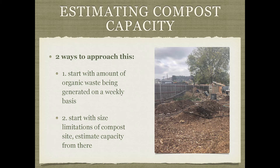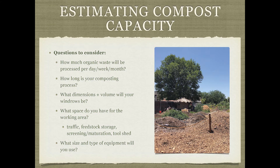On a municipal scale, if you're thinking about how to compost all the organic waste in a city, you can estimate the total organic waste being generated, and if you want to process all of that through community composting, think about the land area needed and how it could be divided among different community hubs throughout the city. There are a couple of key questions to think about regarding area size and processing capacity.